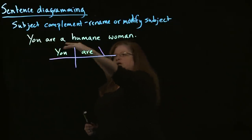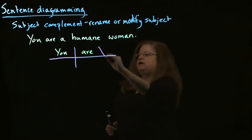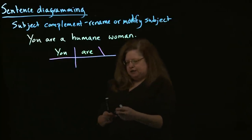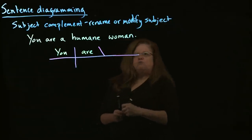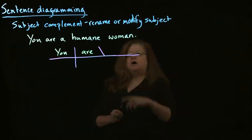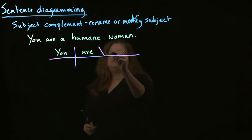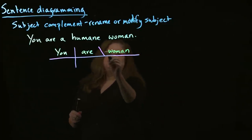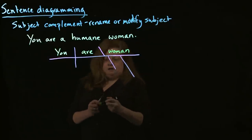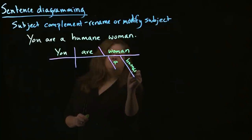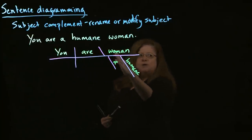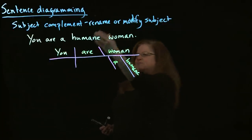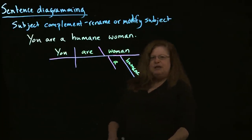You'll see how the angle is tilted toward the subject of the sentence — that is how you tell this is going to apply to the subject. In this case, we're renaming the subject. The subject complement is 'woman,' and then we have some other modifiers: 'a humane woman.' When we have this line tilted back toward the subject, it's referring to the subject — in this particular case, renaming the subject.